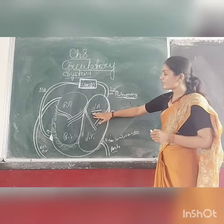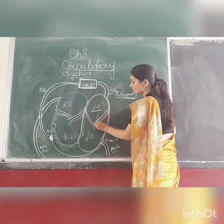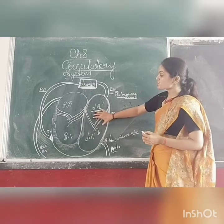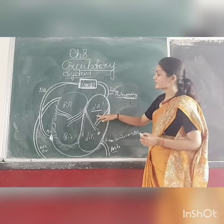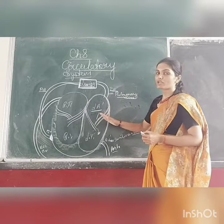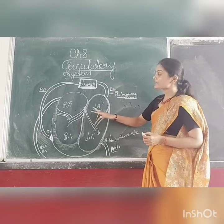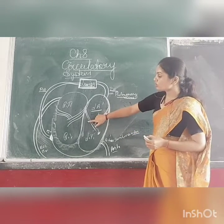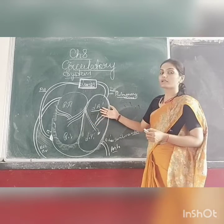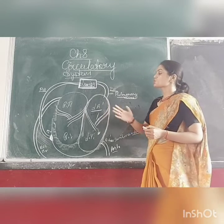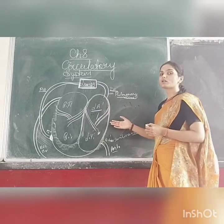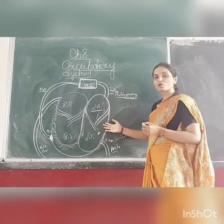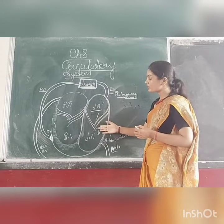After that, from the left atrium, the blood goes inside the left ventricle. There are two valve cusps present between the left atrium and left ventricle of the heart — these are called bicuspid valves. There are two barriers, that's why the left side of the heart contains bicuspid valves. It is also known as the left atrioventricular valve.